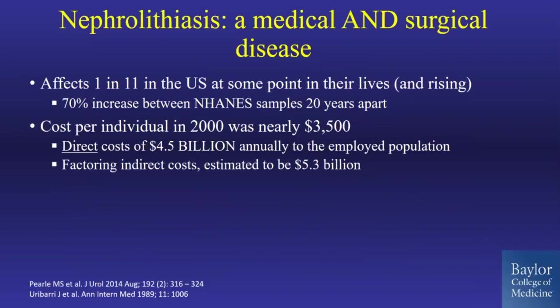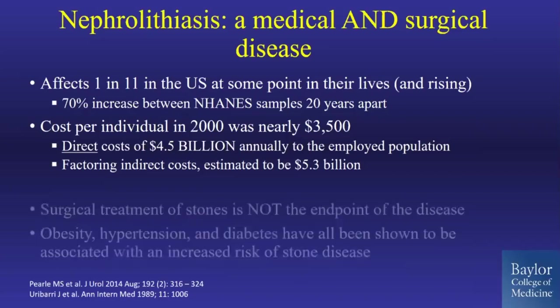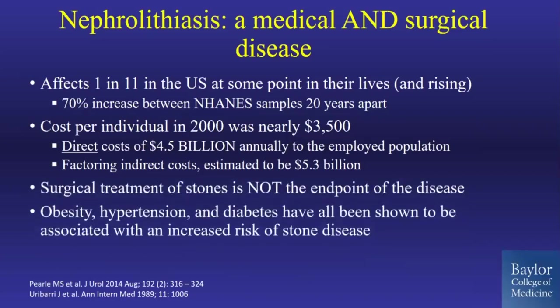Nephrolithiasis is both a medical and a surgical disease, and by no means is surgery the endpoint. It affects 1 in 11 in the U.S., with incidence steadily increasing over the last two decades. The cost is a staggering $5 billion including indirect costs per year. These patients have a chronic disease process — metabolic stone disease — with a recurrence risk of over 50% at 10 years. They often have hypertension, diabetes, and obesity, so we have to care for the whole patient, not just their surgical issue.